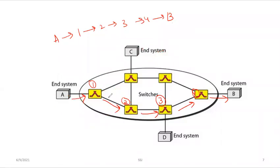For example, if A is sending to B and C also wants to use the network, the switches need to decide a separate allocation — the existing connection won't be interrupted. Unlike in the data link layer where collisions can occur, in circuit switching there is no chance of collision or delay. The delay at each node is negligible because once the connection is established, the switches won't share it with any other station.